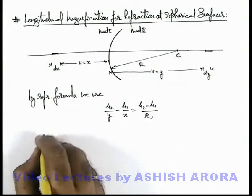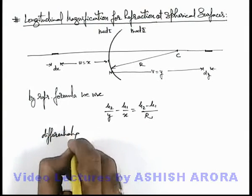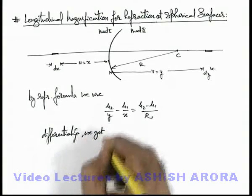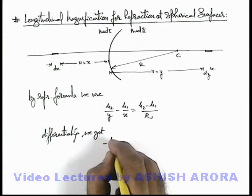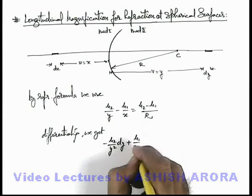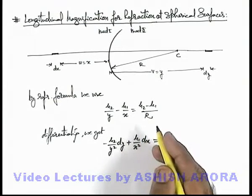And here if we differentiate it, on differentiating we get this relation will be minus mu 2 by y square dy plus mu 1 by x square dx should be equal to zero because mu 2 minus mu 1 by r are constant.